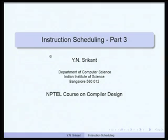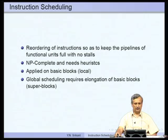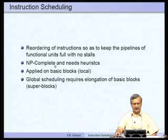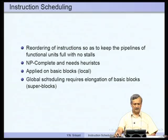Welcome to part 3 of the lecture on instruction scheduling. Briefly, reordering of instructions so as to keep the pipelines full and make sure that there are no stalls is exactly what instruction scheduling is all about. As usual, it is an NP-complete problem and we need lots of heuristics. The metric used to measure the effectiveness of a scheduling algorithm is the length of the schedule — the minimum number of cycles. If we apply it on basic blocks, it is called local scheduling; if we apply it on many basic blocks, it is called global scheduling.